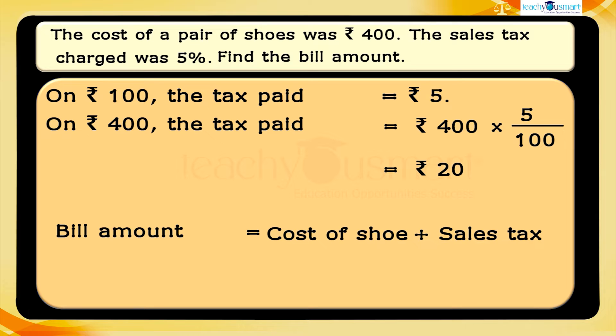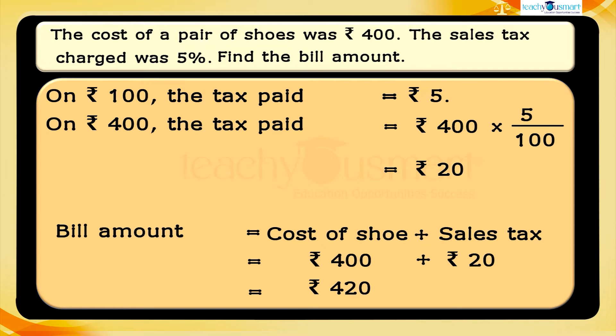Bill amount = cost of shoe + sales tax = 400 rupees + 20 rupees = 420 rupees.